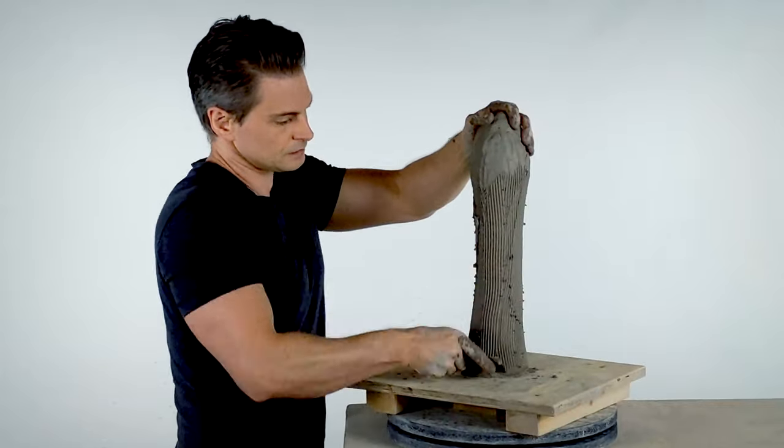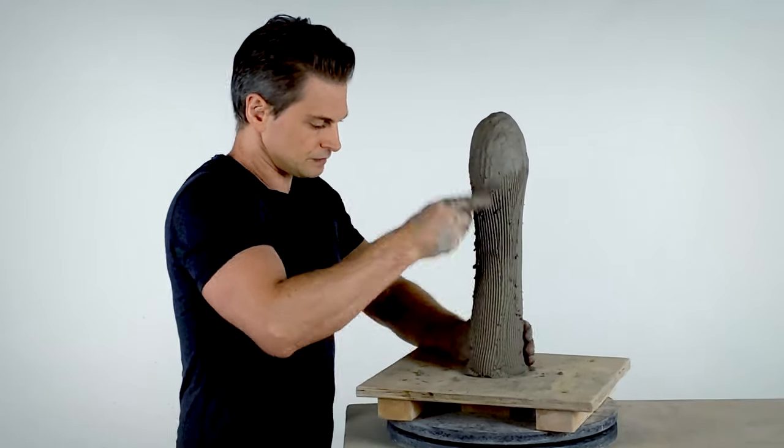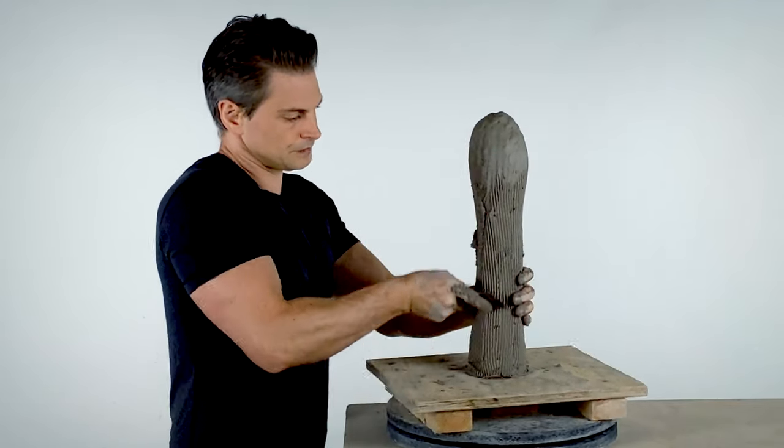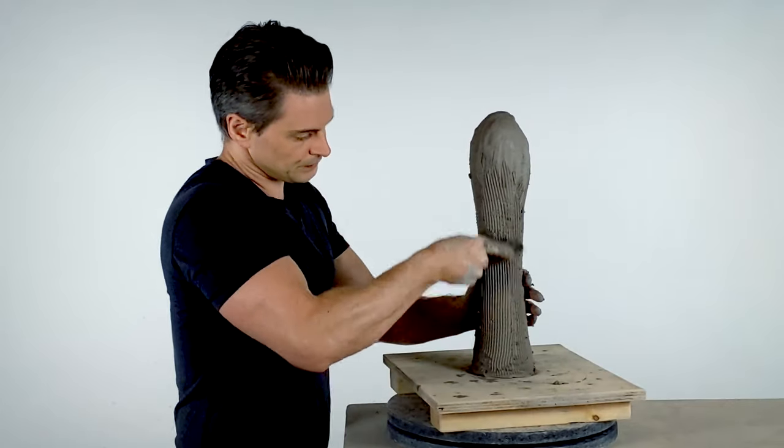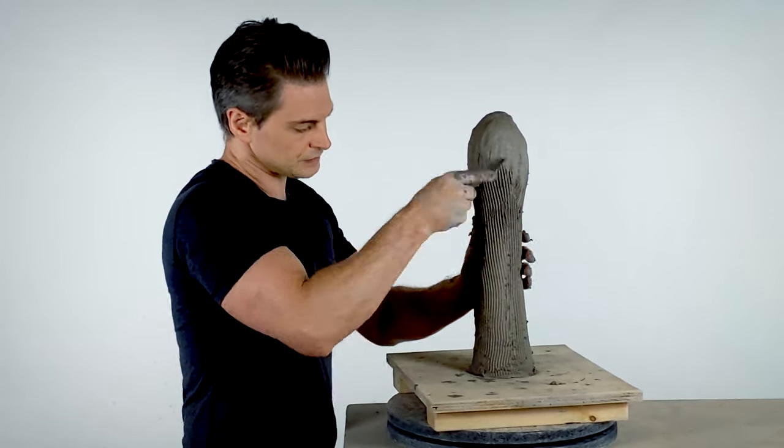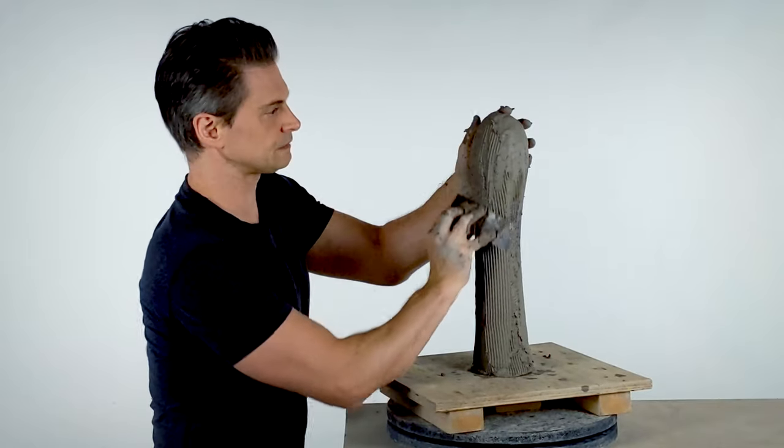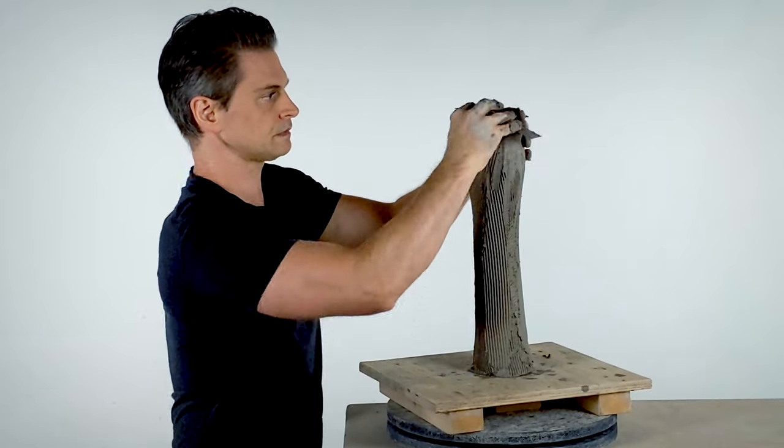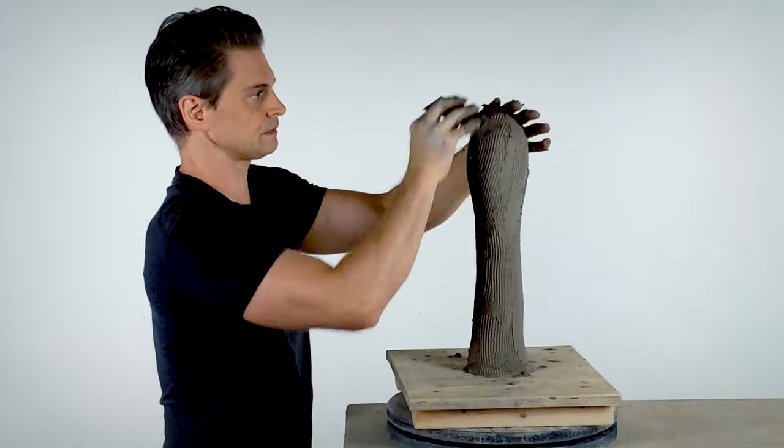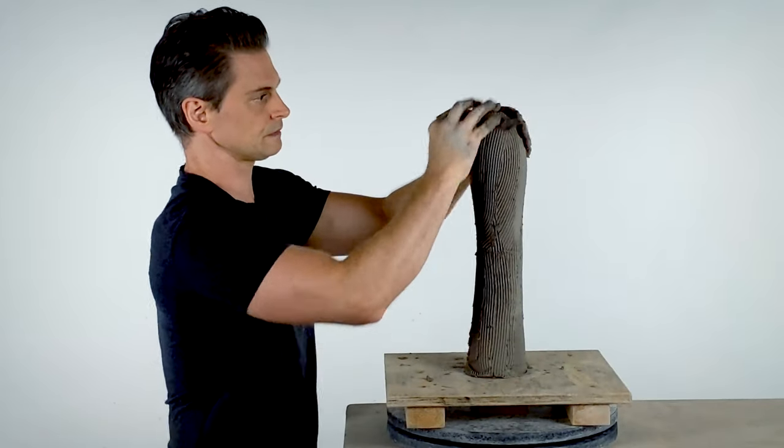If handled correctly, ribs are very effective tools because they can be used for compression, removal, and addition. For instance, you can scrape away clay by holding the rib at a high angle, then spread that removal back on by holding it at a low angle. This is a great way to quickly remove high spots and fill in low spots in order to even out surfaces.